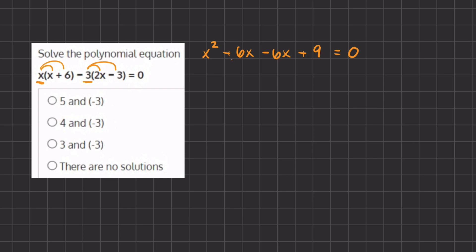And as you can tell, the positive 6 and the negative 6 are going to cancel each other out, and we are left with x squared plus 9 equals 0. Now in order to solve for x, we can subtract 9 on both sides, and now we have x squared equals negative 9.